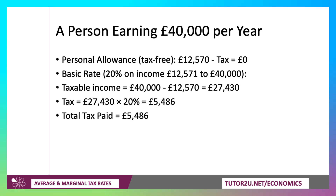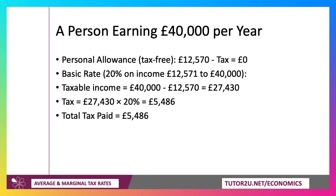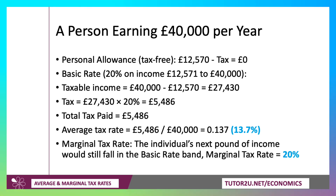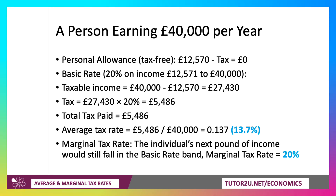The first £12,570 is tax-free — no tax paid on that. The remaining £27,430 is taxable at 20%, and 20% of that is £5,486. So they pay £5,486 in tax. That gives an average tax rate of 13.7% — tax paid divided by income — whereas the marginal rate is 20%. If the person were to earn £41,000, that extra £1,000 would be taxed at 20%.